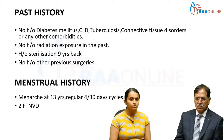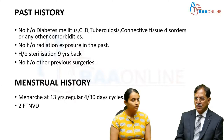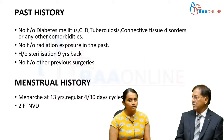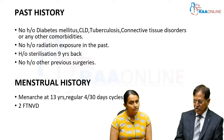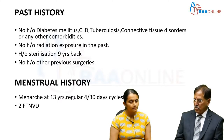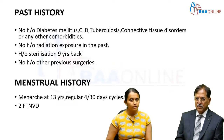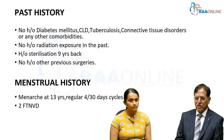Past history: no history of diabetes, chronic liver disease, tuberculosis, connective tissue disorders, or other comorbidities. Avoid abbreviations in exams — for example, CLD means chronic liver disease. How is chronic liver disease related to parotid? Sialadenomegaly occurs in alcoholics, who can develop parotiditis and chronic sialadenomegaly. Tuberculosis is asked to rule out lymph node pathology. Be relevant in a short case.